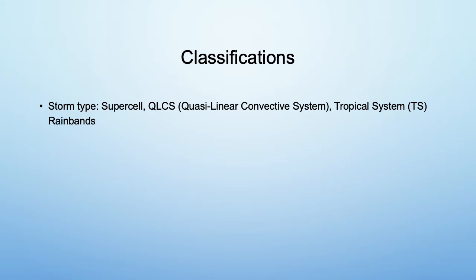Now I'll discuss the classifications I made. First I looked at radar data to determine the parent storm type for each tornado, and those are supercell, QLCS or Quasi-Linear Convective System, and Tropical System rain bands. I'll go into more detail on the next few slides.